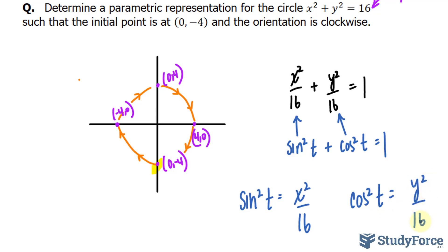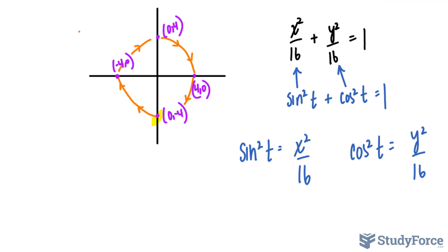Next, we want to solve these equations so that we have both x and y isolated. For this one, I'll multiply both sides by 16. I have 16 times sine squared t is equal to x-squared. And for this one, I have 16 cosine squared t is equal to y-squared.